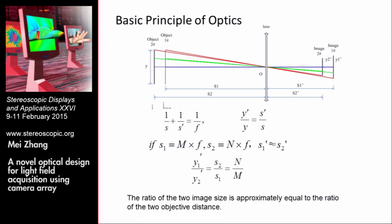We can understand the reason from the basic principle of optics. For example, if we move the object from position 2 to position 1, then the image size will be larger. From this mathematical calculation, we can know that the ratio of the two image sizes is approximately equal to the ratio of the two object distances.